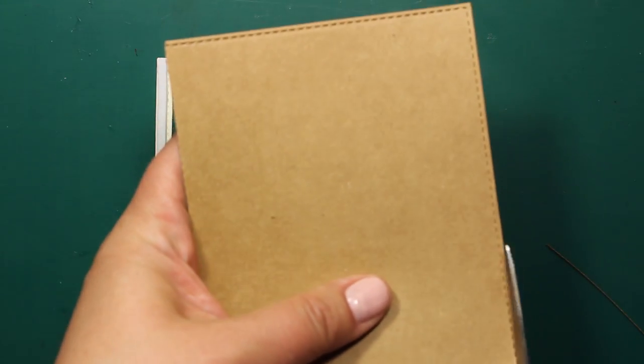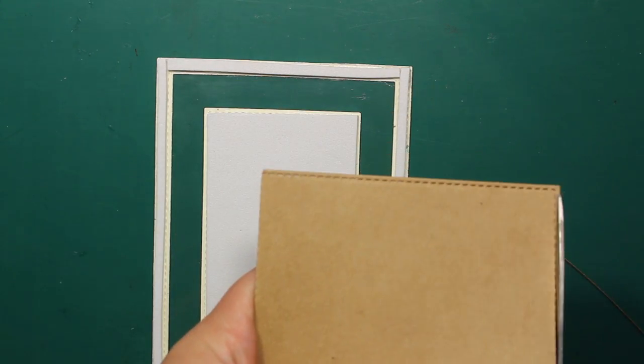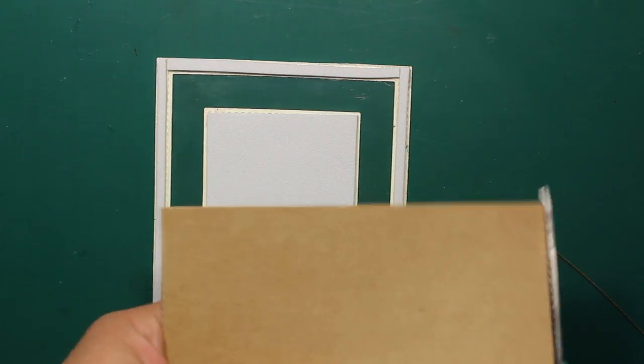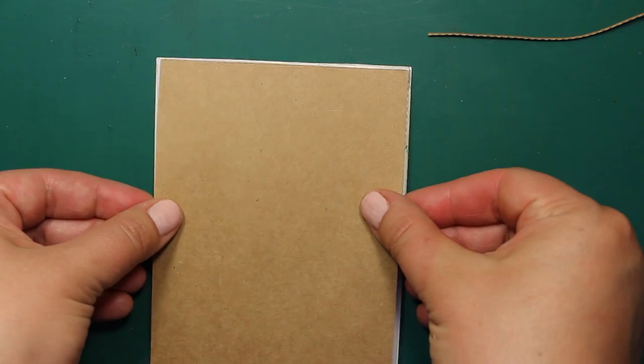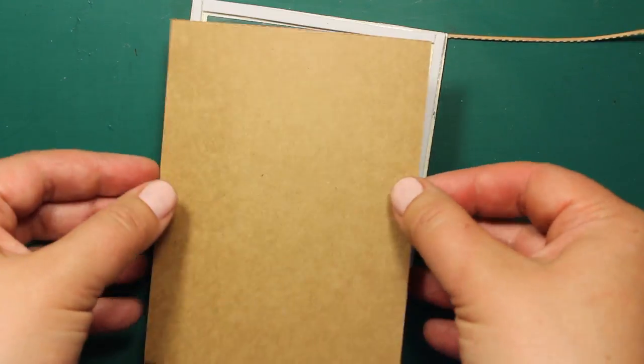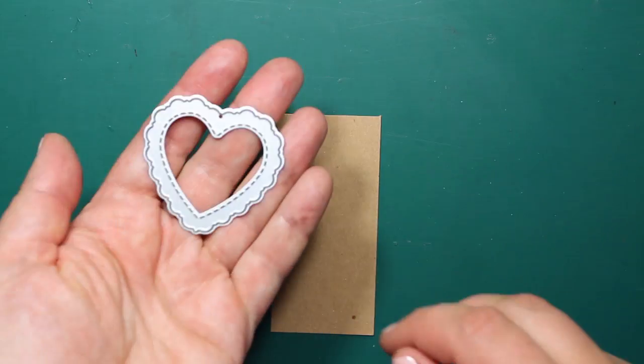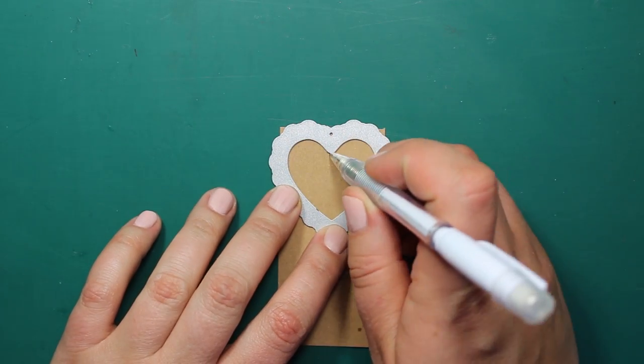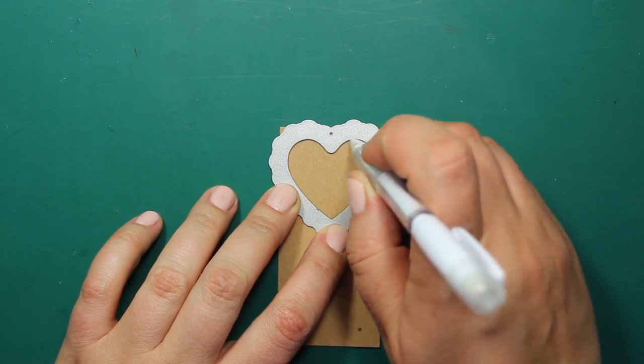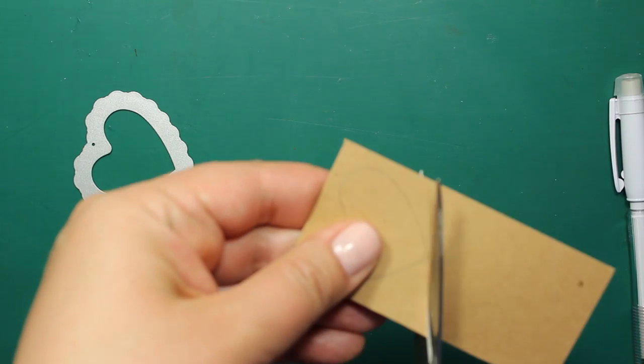This craft panel will be the backdrop for the shaker frame. I'm trimming it the same way as I trimmed the acetate. Before I assemble the shaker frame, I will also need to trace this heart on the inside and then cut it out with the scissors.